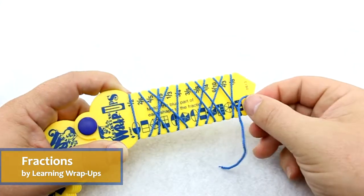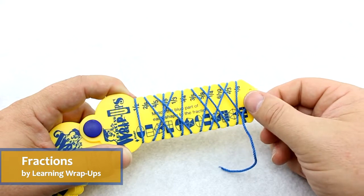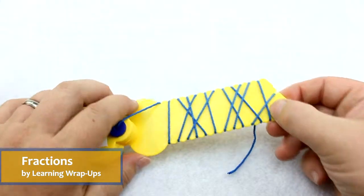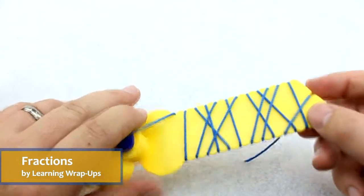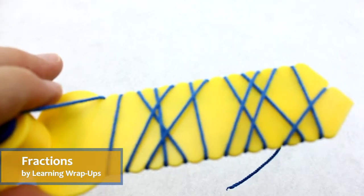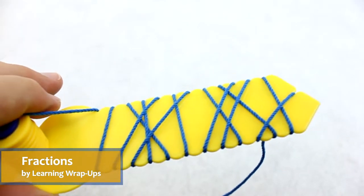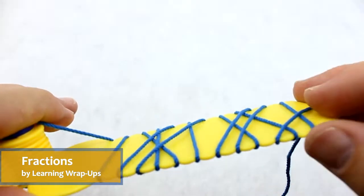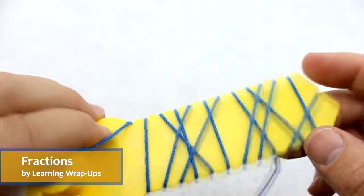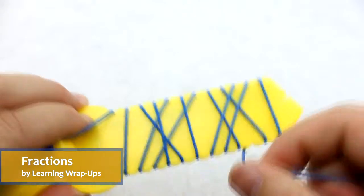And the key is, once you've wrapped the string around the entire key, when you flip it over, there are actually little grooves on the back that will show you that you did it correctly. Now in this case, you can't see those lines because I did it correctly.